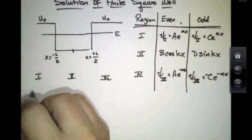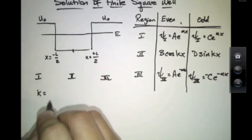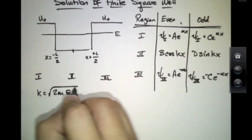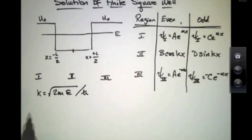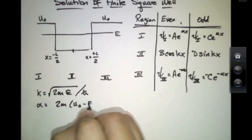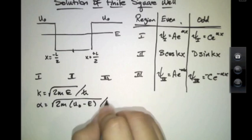And remember that k, the wave number inside the bound region, is going to equal square root of 2m E over h-bar. This is a potential of zero inside. And alpha is going to equal square root of 2m times U₀ minus E over h-bar.